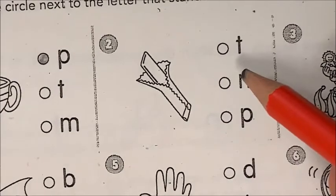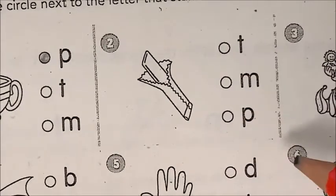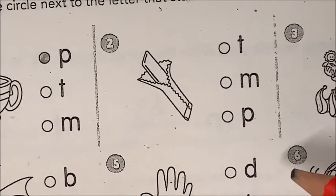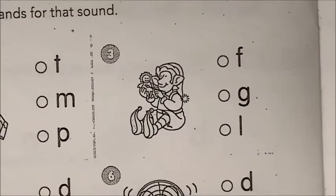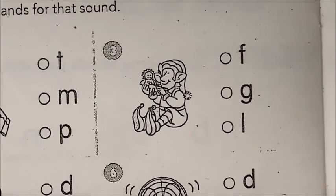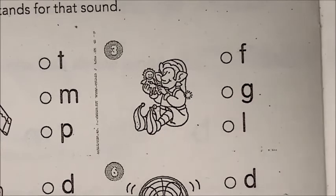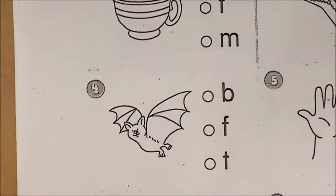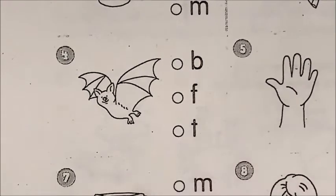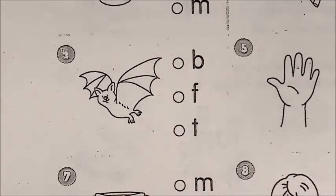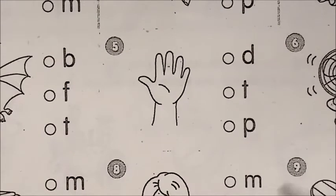Gum. Gum. Number two, gum. Gum. Number three, elf. Elf. Elf. Number four, bat. Bat. Bat.